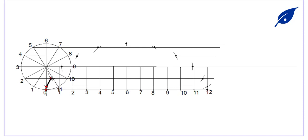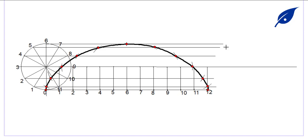We've now marked all the points — you can see the dotted points on the drawing. We're going to connect these points using a French curve or any flexible curve. The important thing is to make sure your curve is very smooth; connect two or three points that are close to each other, moving progressively along until you complete the locus of the cycloid.